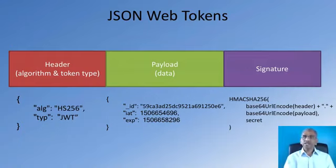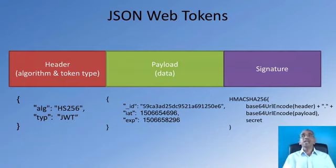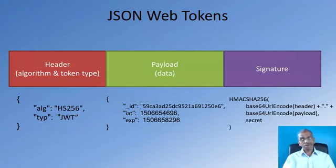The JsonWebToken is encoded into a long string consisting of three parts: the header, the payload, and the signature. The header contains the specific algorithm used for encoding the JsonWebToken and the type of token. The algorithm in this case is HS256, a 256-bit encoding scheme used for hashing the information inside the token. The type field is set to JWT, indicating it is a JsonWebToken. That is the information stored in the header of the JsonWebToken.